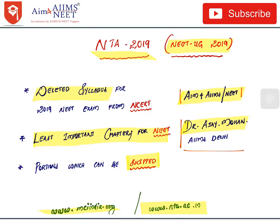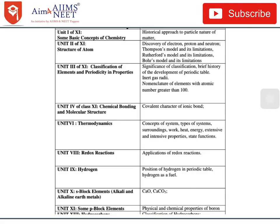Let's see what is deleted from NCERT. From Class 11 Chemistry, Unit 1 — Some Basic Concepts of Chemistry — the historical approach to particle nature of matter is deleted. Unit 2 — Structure of Atom — the discovery of electron, proton, neutron, Thomson's model and its limitations, Rutherford's model and its limitations, and Bohr's model and its limitations have all been deleted.